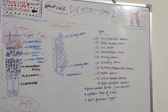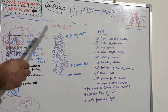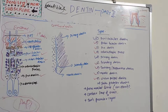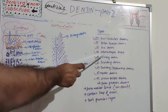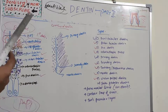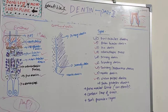Secondary dentine is a narrow band of dentine bordering the pulp which contains fewer tubules than primary dentine. There is usually a bend in the tubules at the primary-secondary dentine interface. Since secondary dentine is formed after eruption, the odontoblasts slightly change direction, contributing to the bending of dentinal tubules. Primary dentine forms before eruption; secondary dentine forms after completion of the root.